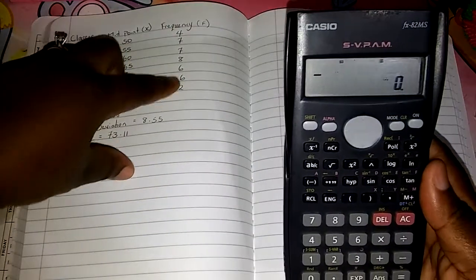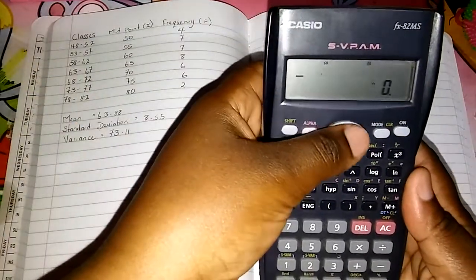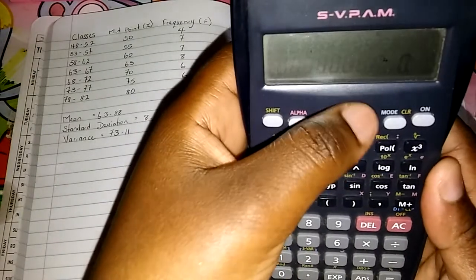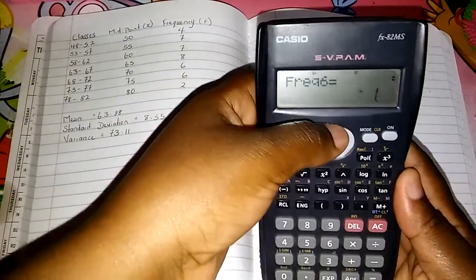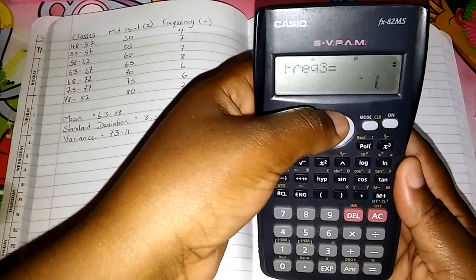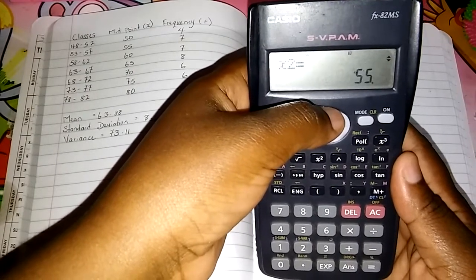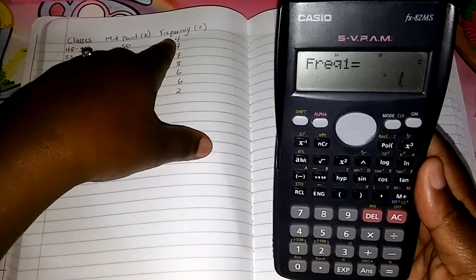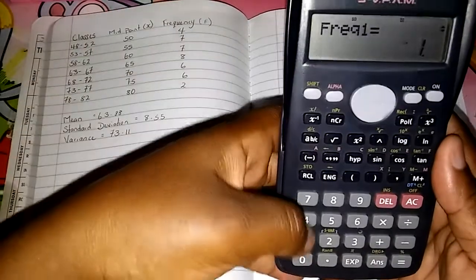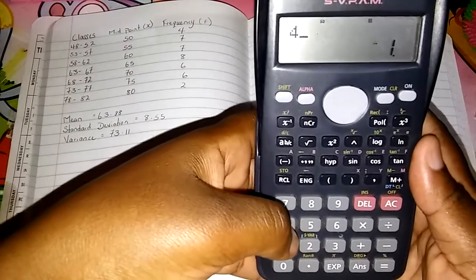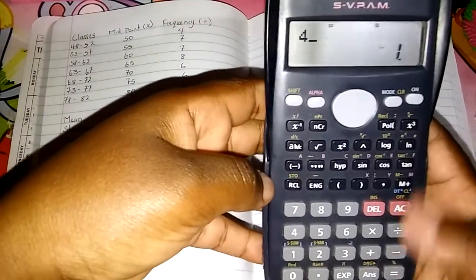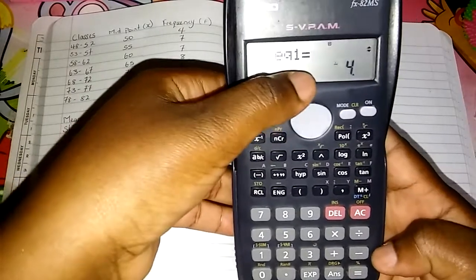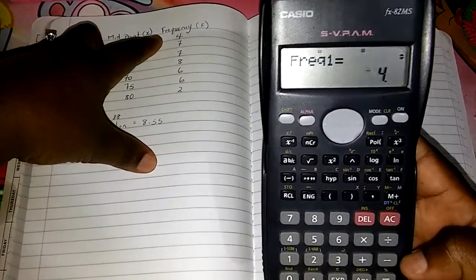All right, so we're going to clear the screen. We want to now add the frequency to match, so we're going to go back using the up button, the up arrow. Yes, we're going to press it to find frequency one. Right, so we find frequency one, we're going to match it now. So the frequency for one is 4. We're going to add 4, and then press the equal sign. It will show us that the frequency for the first number is 4, which is correct.